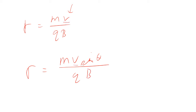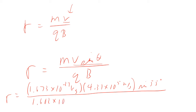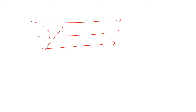It's only the perpendicular component of the velocity that matters. Plugging in the numbers: mass of the proton is 1.673×10⁻²⁷ kg, times velocity 4.31×10⁵ m/s, times sin 55°, divided by 1.602×10⁻¹⁹ coulombs times 1.5×10⁻⁵ Tesla — that comes out to be 246 meters.